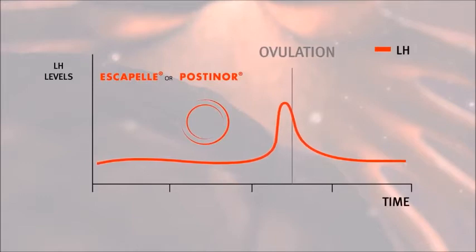They delay or inhibit ovulation by delaying or inhibiting the elevation of the luteinizing hormone levels, this so-called LH surge.